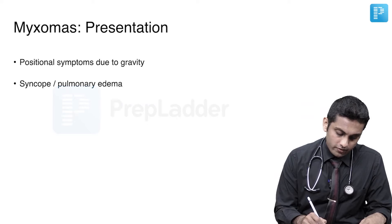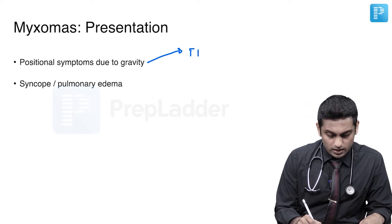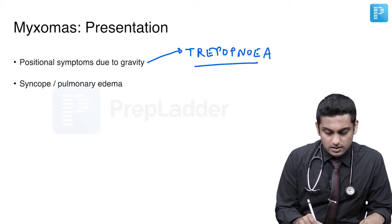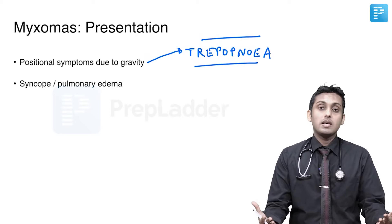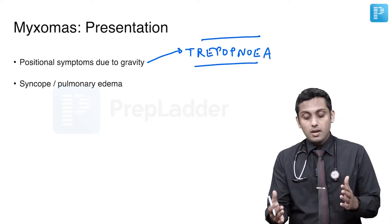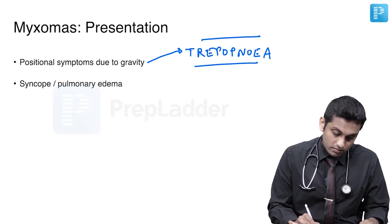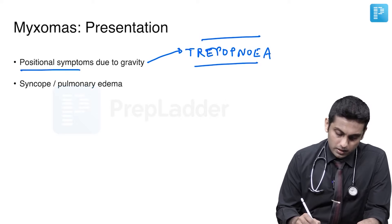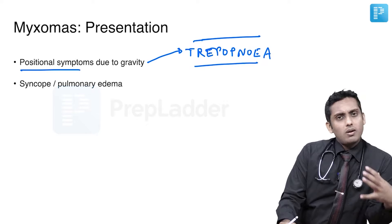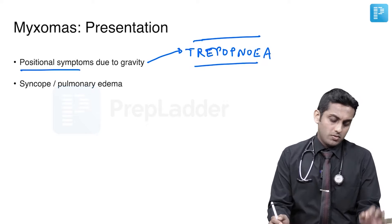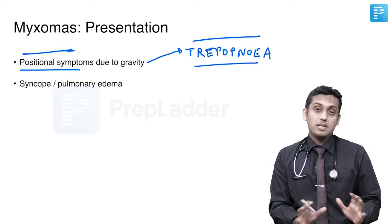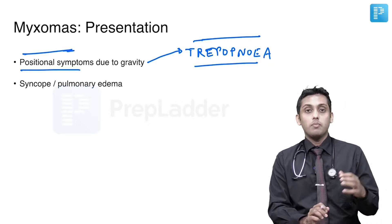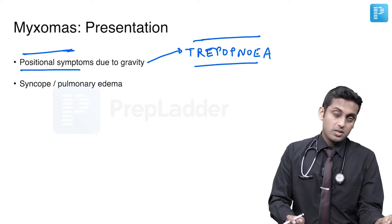This is one example for clinical vivas: if asked for a cause of trepopnea — dyspnea on lying to one side, for example the left lateral position. We have orthopnea, which is dyspnea on lying flat; platypnea, which is dyspnea on sitting up; and trepopnea, dyspnea on lying to one side. Any positional symptoms should raise a flag to think it is probably a manifestation of a mobile mass in the heart, such as a tumour behaving like a ball valve or a myxoma in the left atrium.